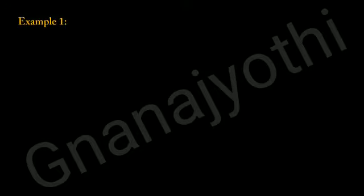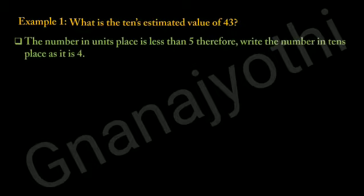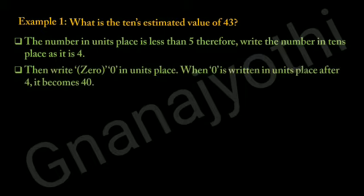Now, observe these examples. Look at example 1: What is the 10's estimated value of 43? The number in the units place is less than 5. Therefore, write the number in the 10's place as it is — 4. Then write 0 in the units place. When 0 is written in the units place after 4, it becomes 40.